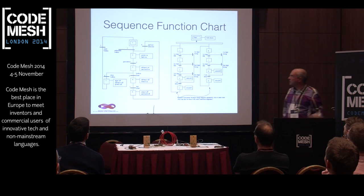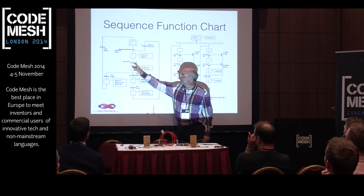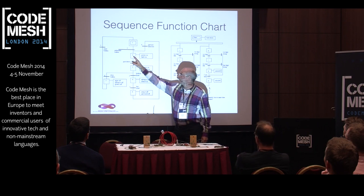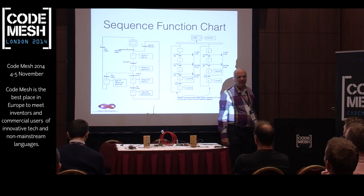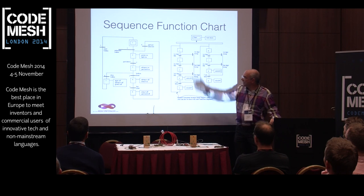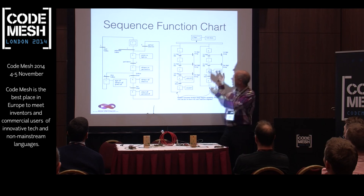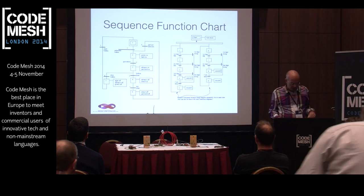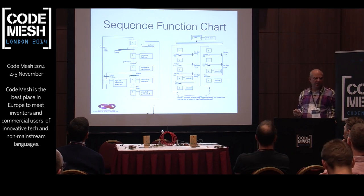There's also a Sequential Function Chart derived from Petri nets. It's basically a state machine — if this state is active and this condition gets activated, then it goes to the next state. You can have diverging and converging transitions, both states. That's mainly the highest level in IEC 61131.